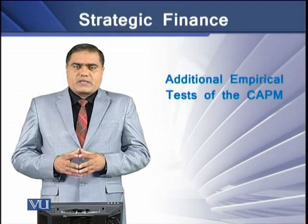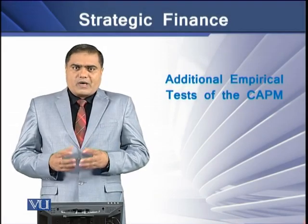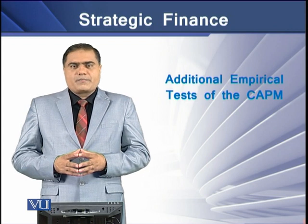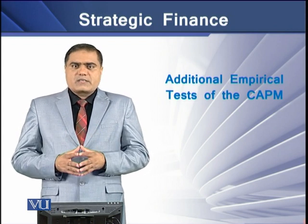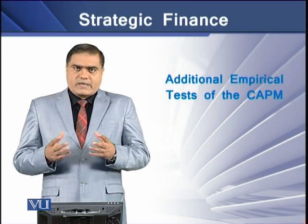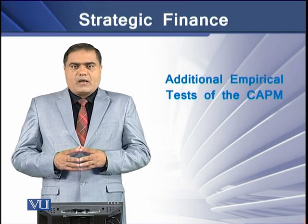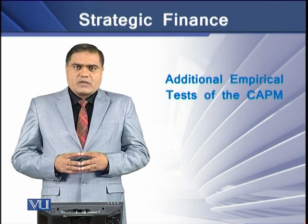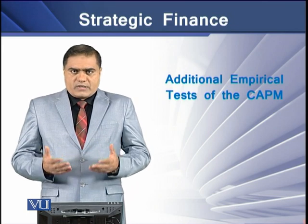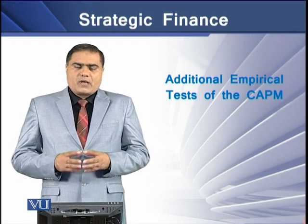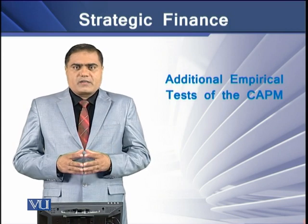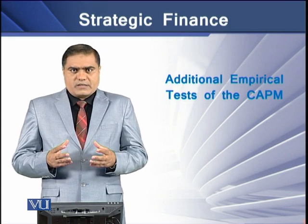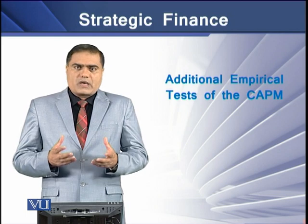While testing the CAPM model, there appear two major questions. The first is how stable is the measure of systematic risk, that is the beta. The second question is whether there is any positive linear relationship between the expected return on a risky asset and the beta, as it is generally hypothesized.